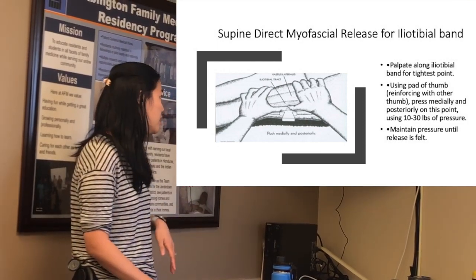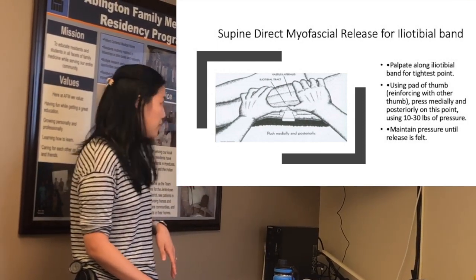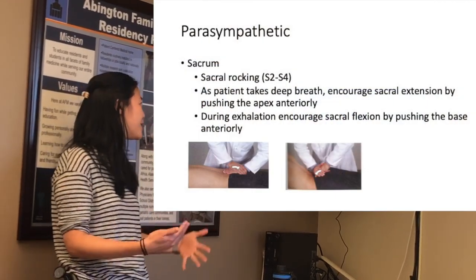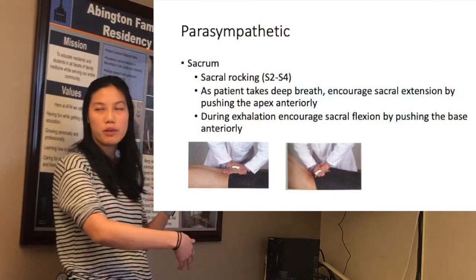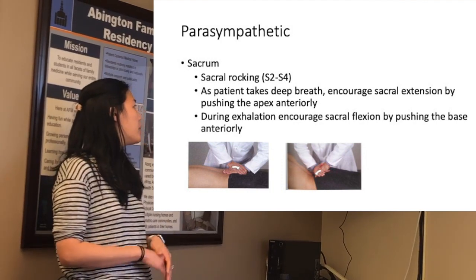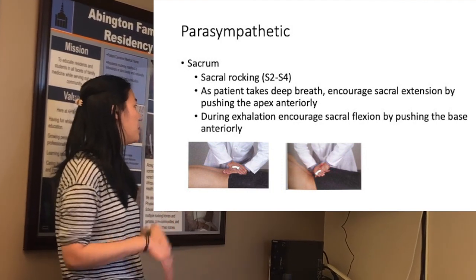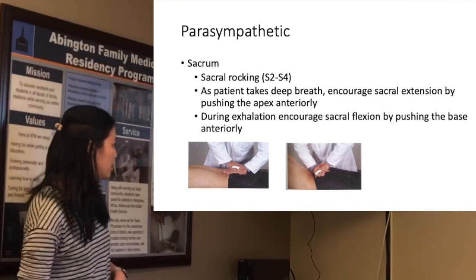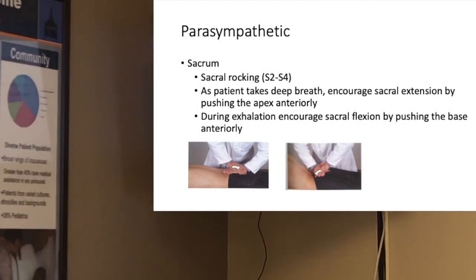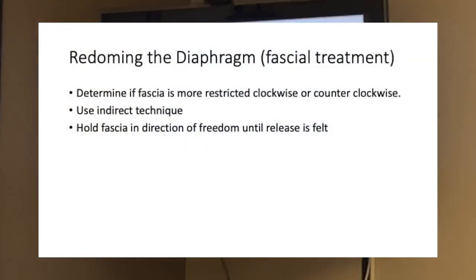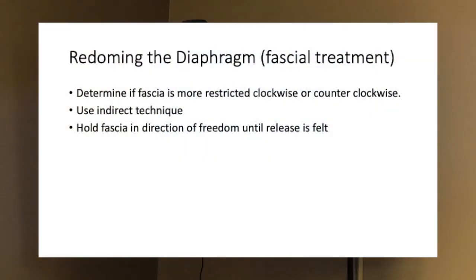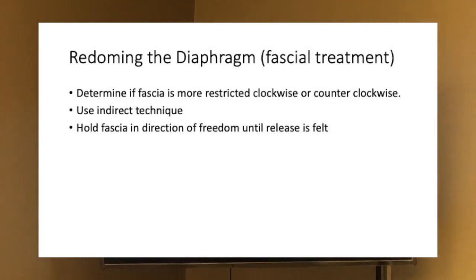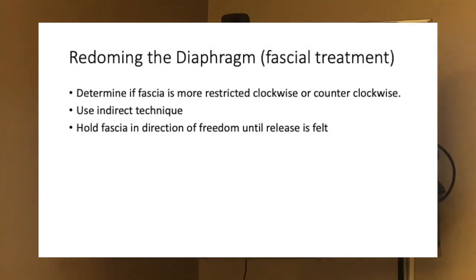There are really only five techniques. Some optional techniques if you feel up for it: have your patient do sacral rocking — have them roll over. When the patient takes a deep breath on inspiration, you push down toward the apex; when they exhale, you push on the base. Re-doming is another option — put your hands on the diaphragm and shift around until you feel an ease, using an indirect technique. It may be harder on larger patients, but something to try.